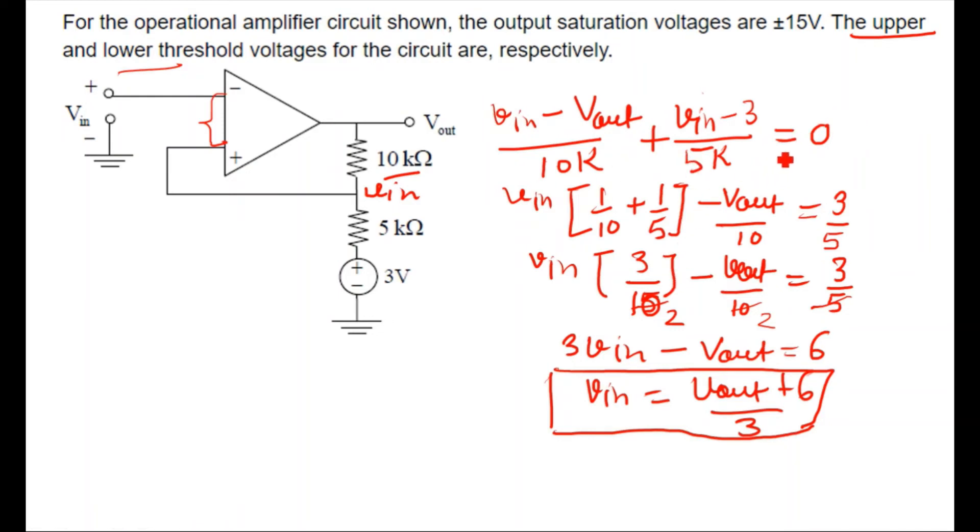This can be your V_in by solving that. Now the question is saying upper limit and the lower limit, and here you can see this is the plus minus 15 volts. So this plus minus 15 volts is the saturation voltage.